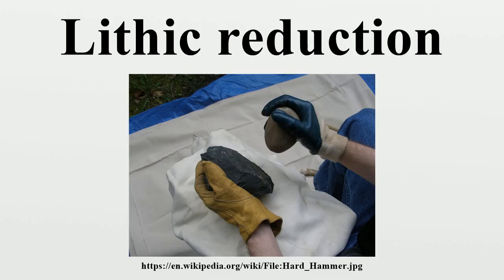Hard hammer techniques are generally used to remove large flakes of stone. Early flint knappers and hobbyists replicating their methods often use cobbles of very hard stone, such as quartzite. This technique can be used to remove broad flakes that can be made into smaller tools, and is believed to have been used to make some of the earliest stone tools ever found, some dating from over two million years ago. It is hard hammer percussion that most often results in the formation of typical conchoidal fracture features, such as the bulb of percussion and compression rings.